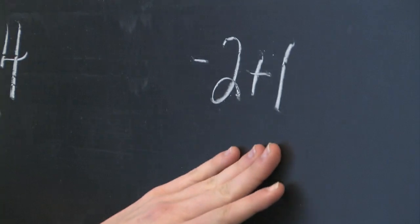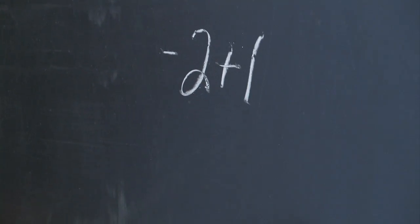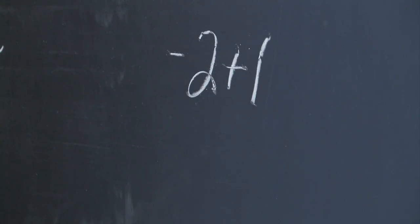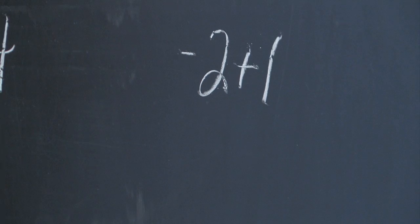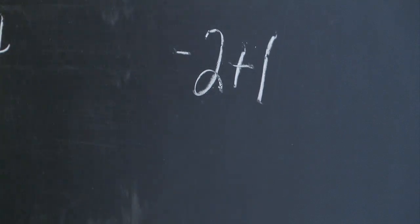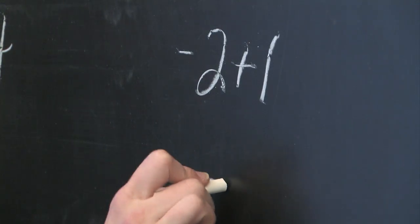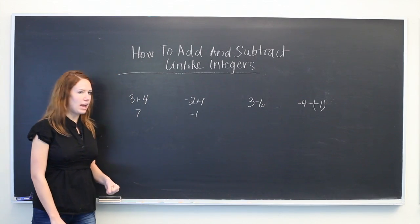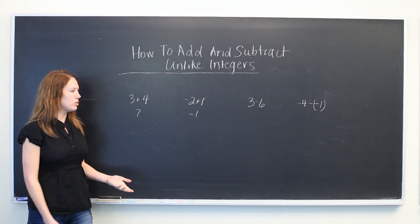-2+1 is a little trickier because it has a negative value. But if you take -2 and add 1, you will have -1. If that's a little confusing, you can picture a number line.